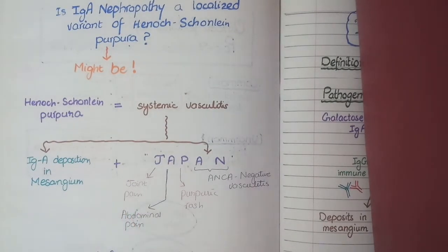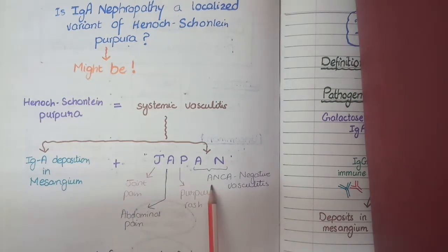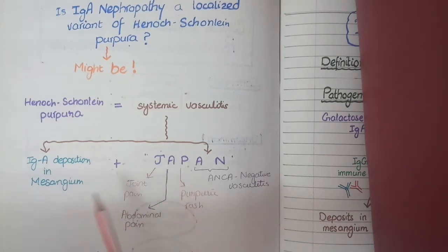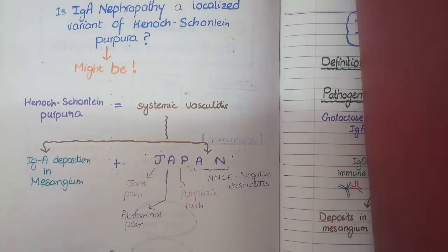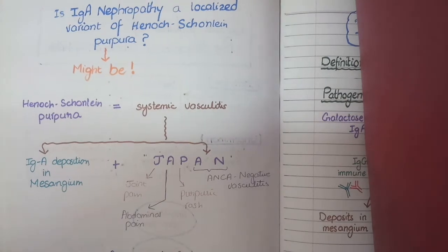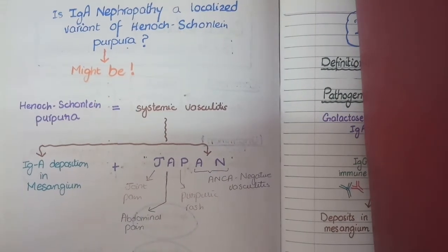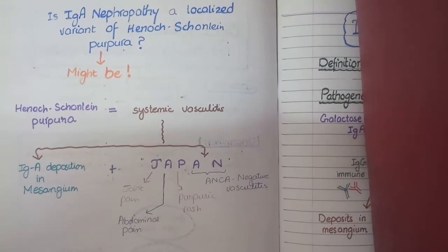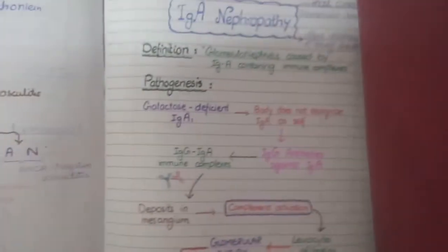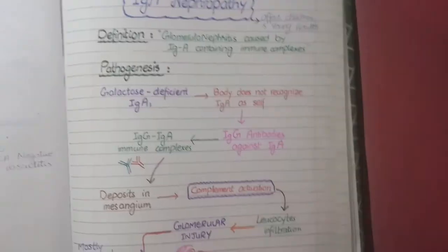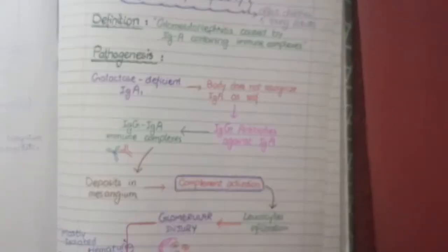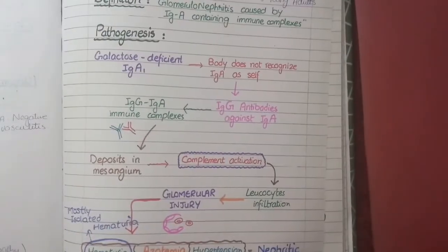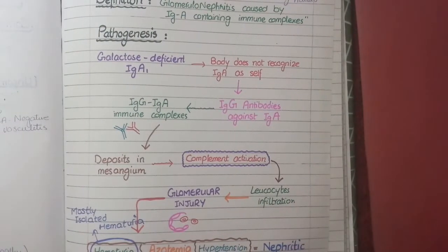In IgA nephropathy these other systemic features are not appreciated, so IgA nephropathy can be considered a localized variant of Henoch-Schönlein purpura. Now let's study the pathogenesis of this disease — how IgA-containing immune complexes result in glomerulonephritis.